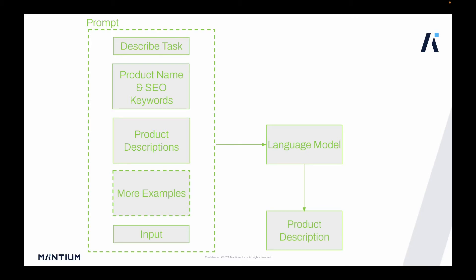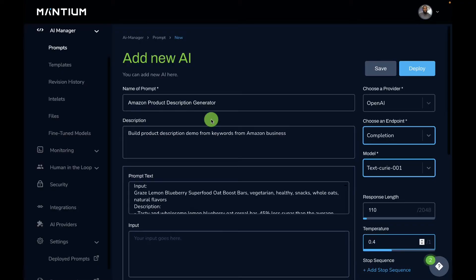After adding the input, that's the structure of the prompt you send to the language model to generate the product description. Using the Mantium no-code platform you can easily do this, and we're going to make use of the OpenAI GPT-3 model. You could also use other models which Mantium makes provision for, and easily generate your product description.